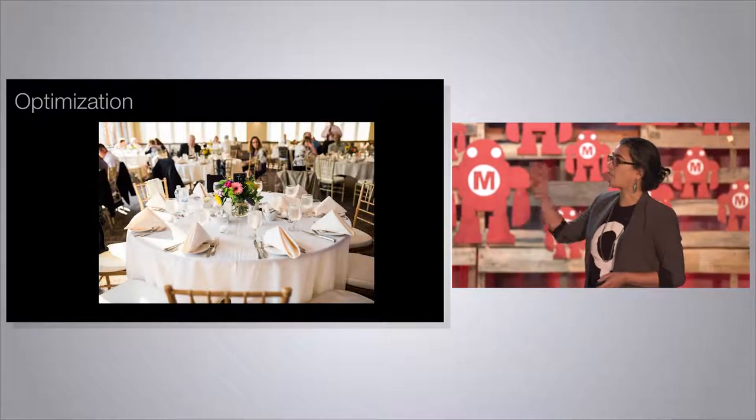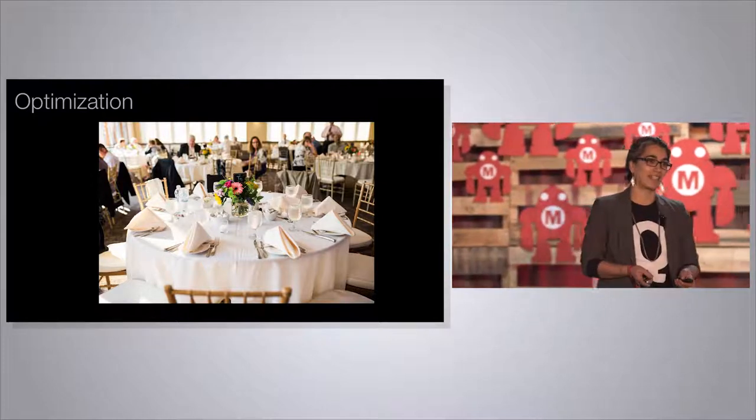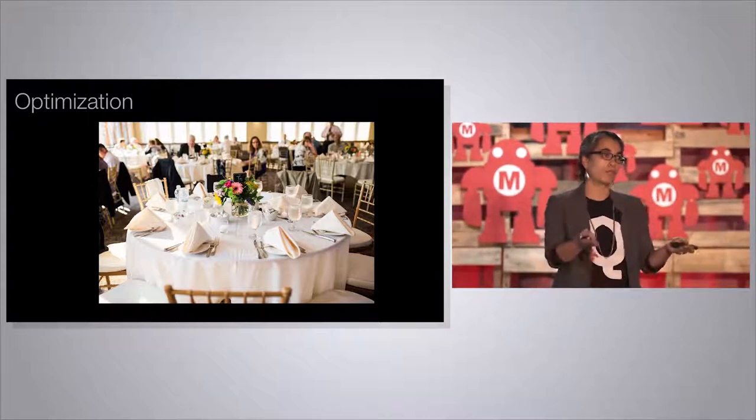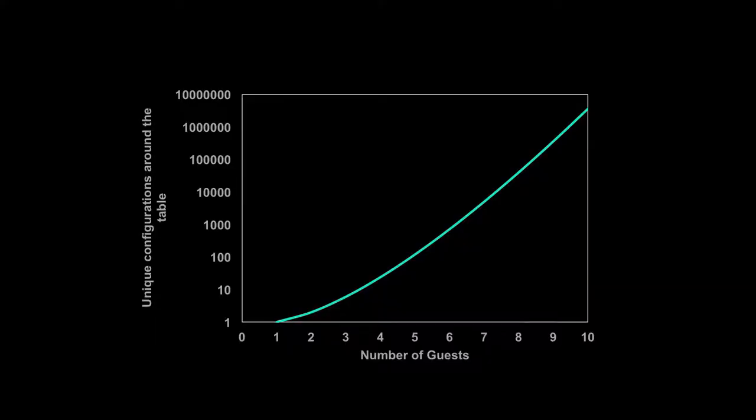The first example is optimization — finding the best solution to a problem among many possible solutions. Here's a picture of a table at my wedding. You can see ten people around a table. If you have ten people over for dinner, how many different ways are there to configure them? The answer is ten factorial — 3.6 million. Next time you have dinner with ten friends, share that fun fact. We consider some of the options and make approximations because it's the only way we'll end up seating people. Every time I add one person, the number of possible configurations grows exponentially. We can solve small versions of this problem on classical machines, but not big versions.